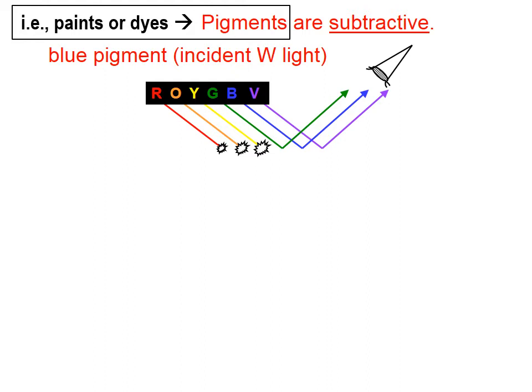Let's say we have incident white light that is shining on some blue paint. Well, that blue paint absorbs certain wavelengths. I say that it is absorbing the red, orange, and yellow wavelengths and is reflecting the green, blue, and violet wavelengths. Our brain interprets those colors as blue.